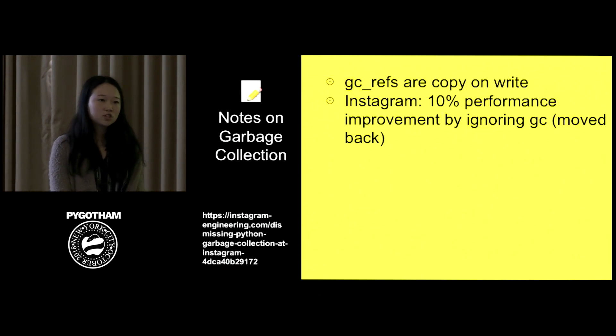So some notes on garbage collection. You saw in step one, we had to copy all of the references. So those are copy on writes and you will see a linear increase on memory because of this. And it can have some performance effects in your program. So for instance, Instagram actually temporarily removed generational garbage collection from the program. And when they did this, they saw a 10% increase in performance improvement. However, they eventually did go back to garbage collection by changing Python a little bit, but you can read about that in their blog.